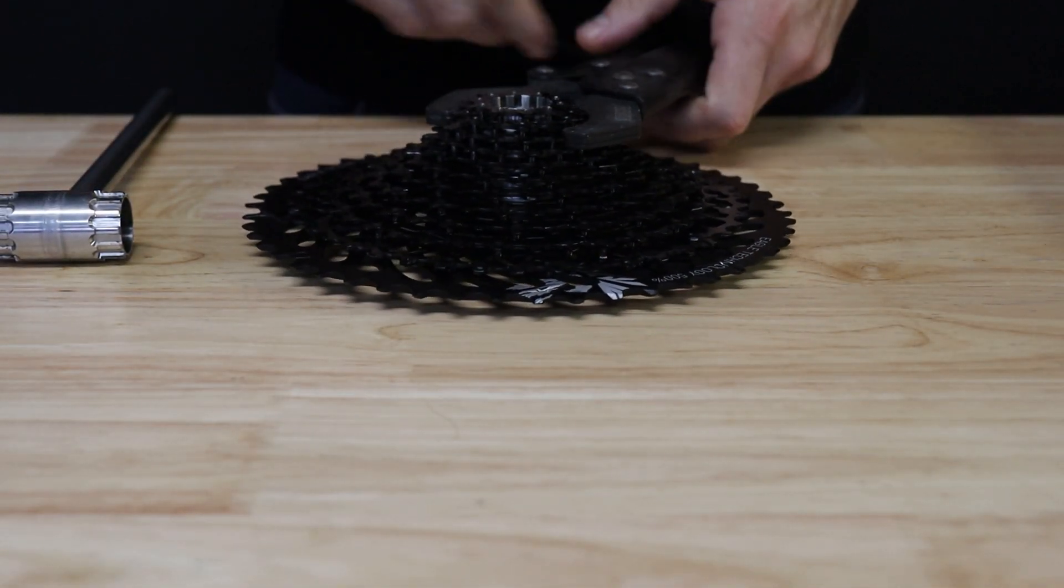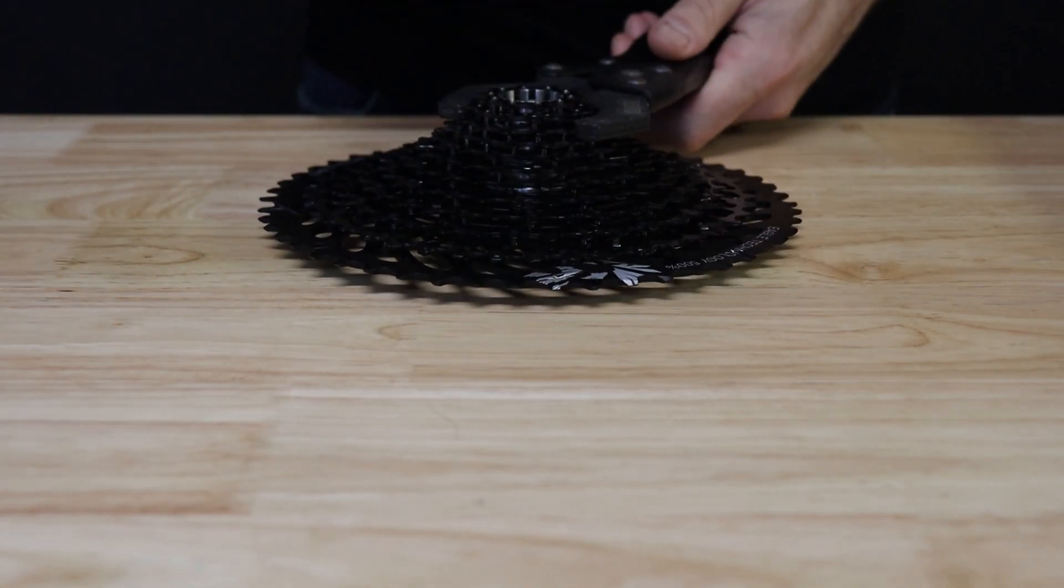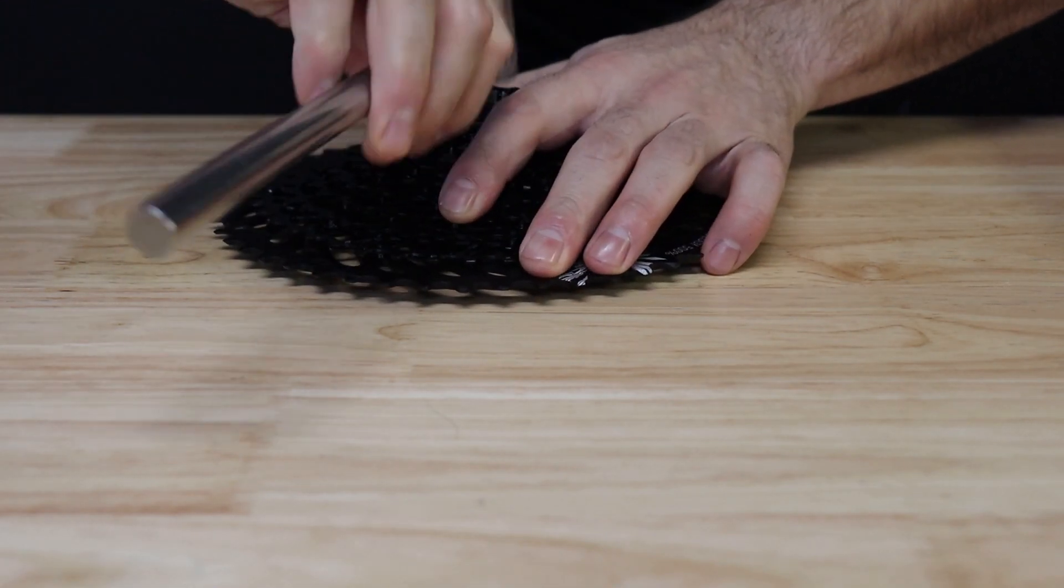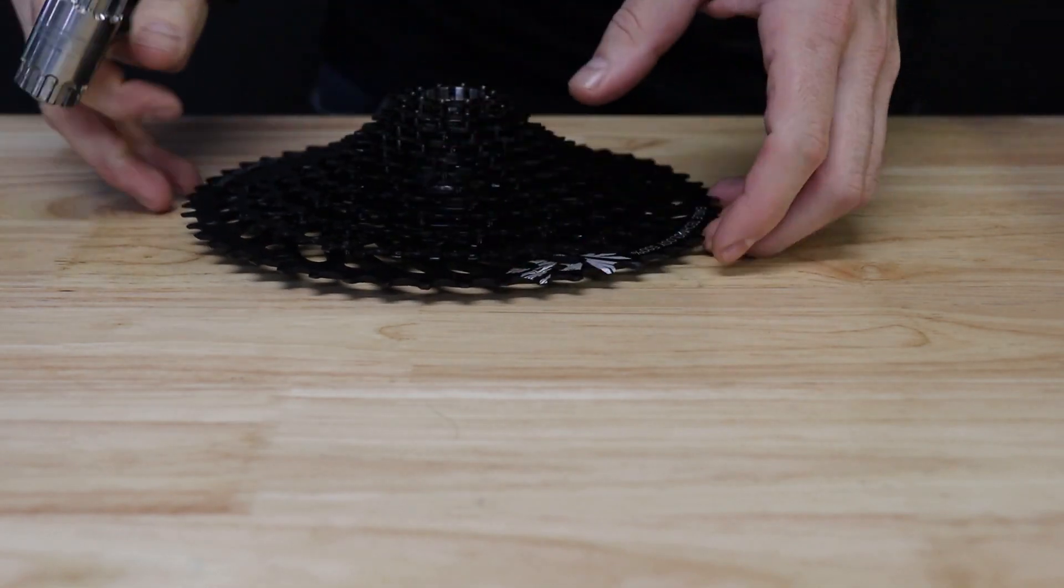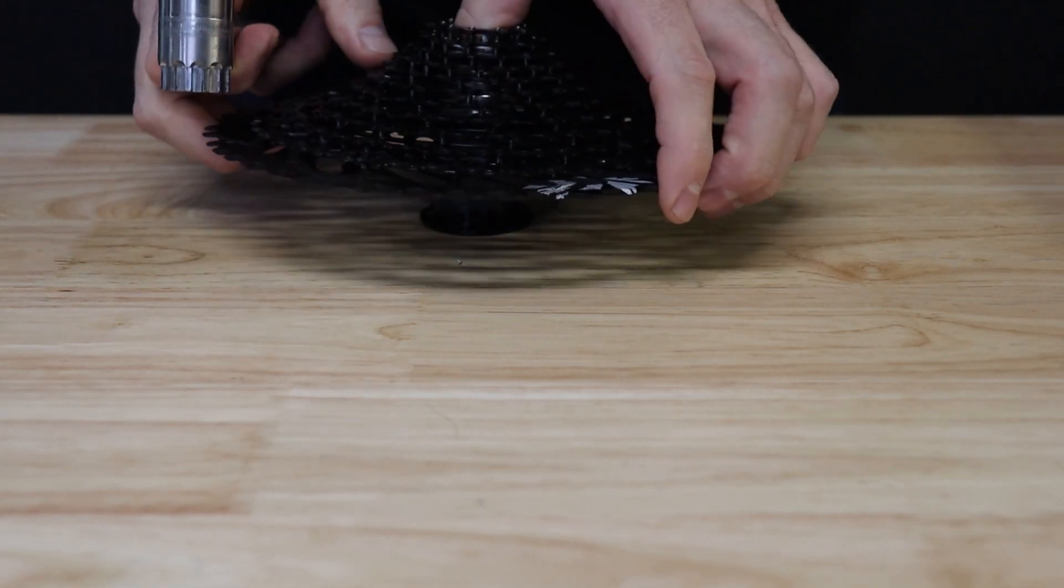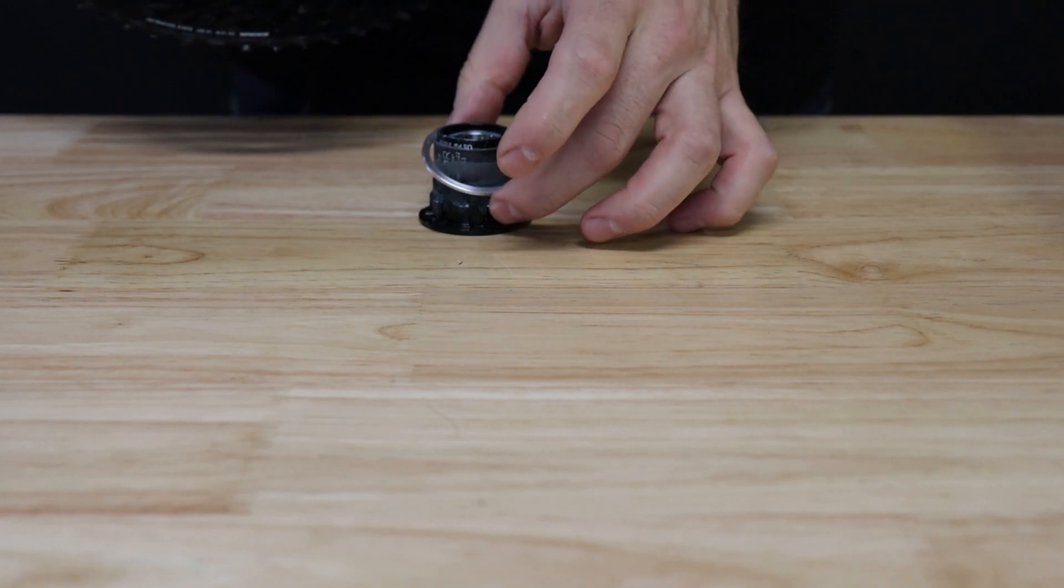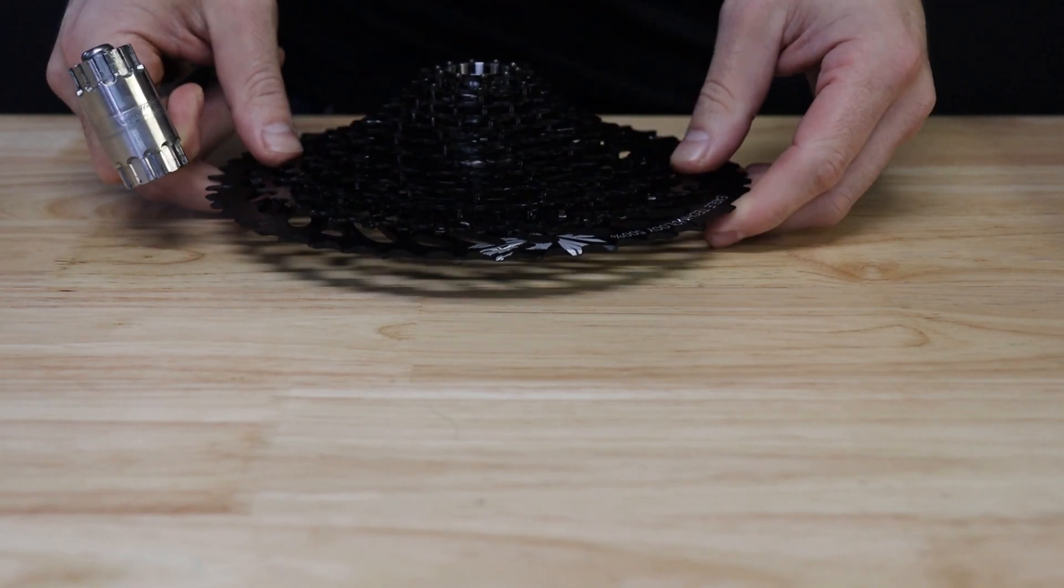Let's go ahead and remove the cassette from the freehub and install the spacer. Once you've removed the cassette from the freehub body, go ahead and install the 1.8 spacer and reinstall the cassette onto the freehub.